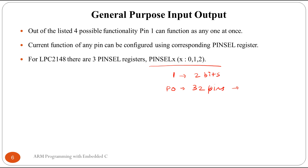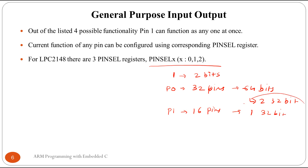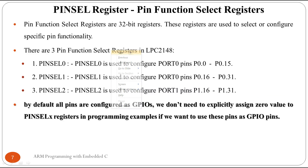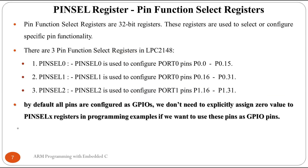Port 0 has 32 pins, requiring 64 bits — so two 32-bit registers. Port 1 has only 16 pins, so one 32-bit register is sufficient. These three registers are the pin select registers used to select the functionality of the pins.